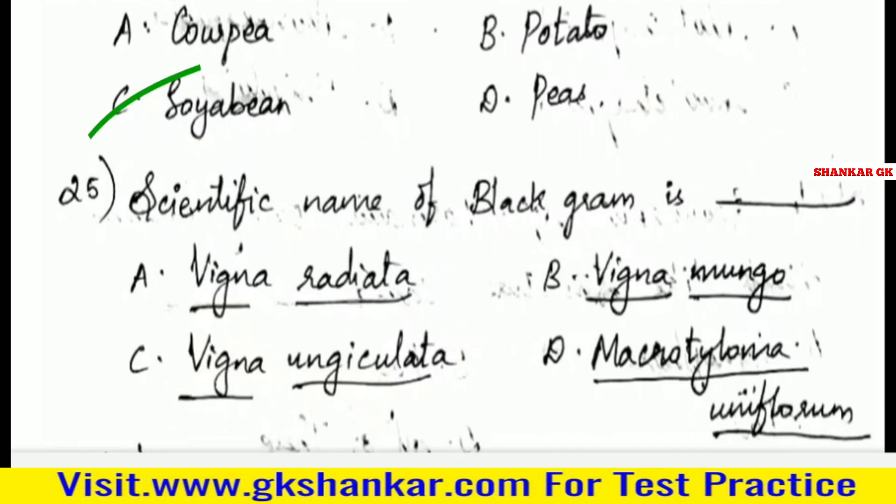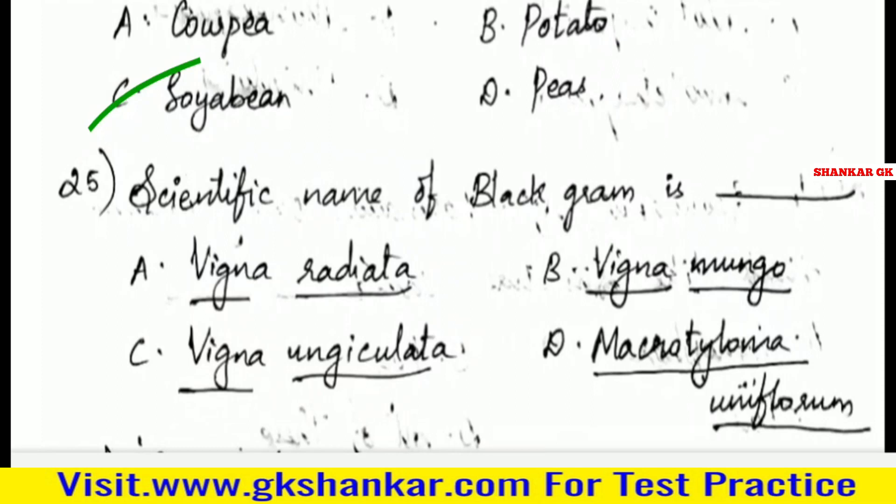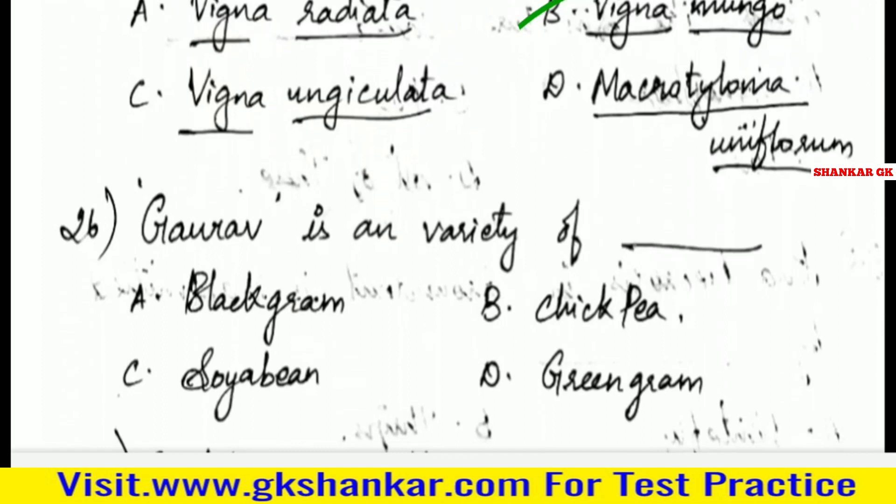Twenty-fifth question: Scientific name of black gram is — A. Vigna radiata, B. Vigna mungo, C. Vigna angiculata, D. Macrotyloma uniflorum. Answer: B. Vigna mungo.